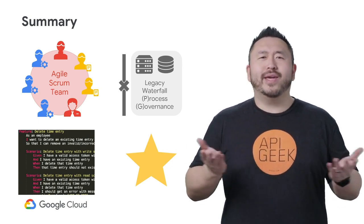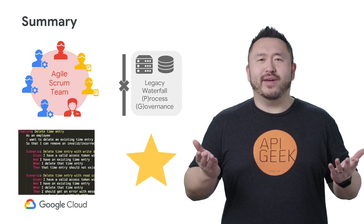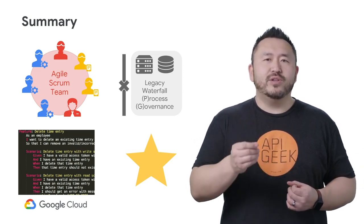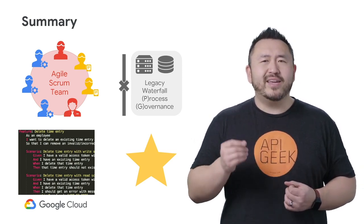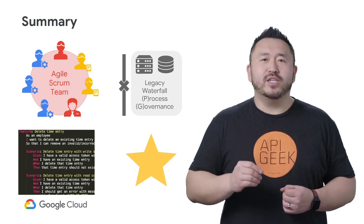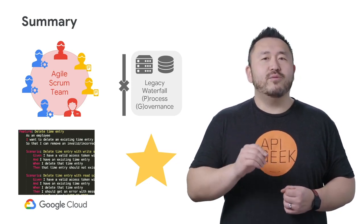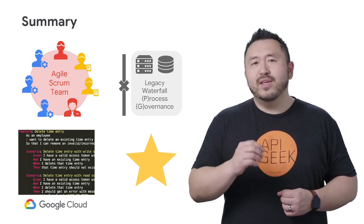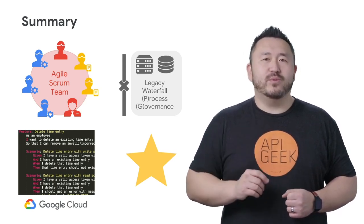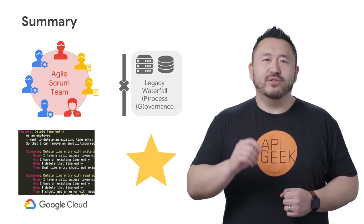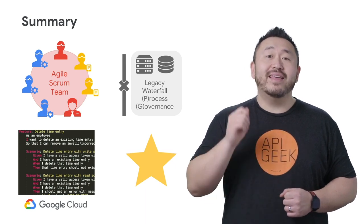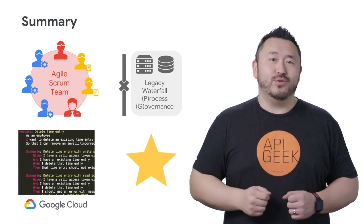Don't worry — you won't get it perfect on day one. Use the feedback loops like the sprint ceremonies to take feedback and optimize. Every agile team will tailor their process over time. If there's one last principle of agile to remember, it's about continuous improvement. That's your North Star.